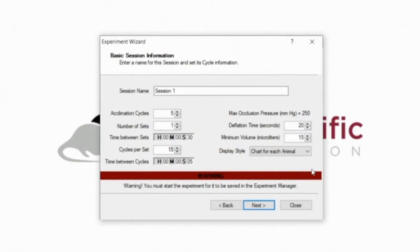This includes acclimation cycles, which are practice measurements before you start recording, and the number of regular cycles, which will be your data measurements. Kent Scientific recommends at least 5 acclimation cycles to allow for any adjustments that need to be made prior to data collection, and a minimum of 10 to 15 regular cycles per session.